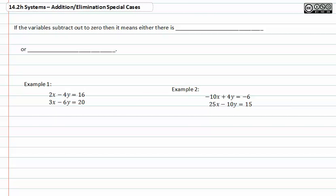If the variables subtract out to zero, then it means either there is infinite solutions or no solutions.